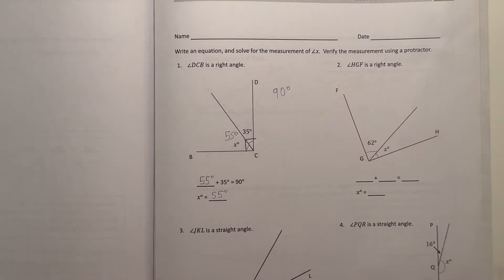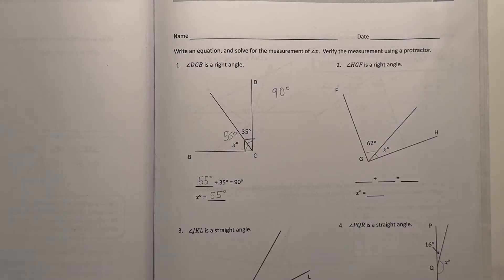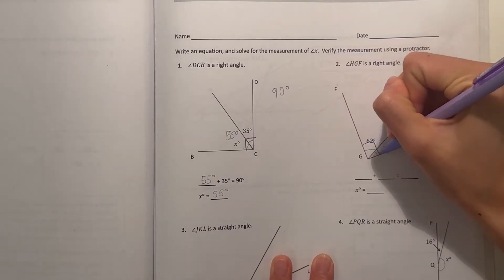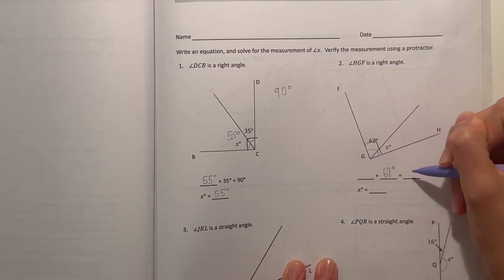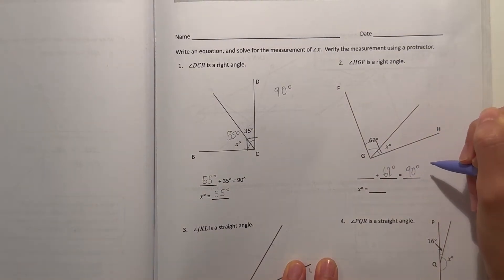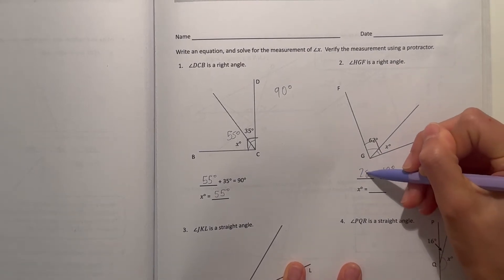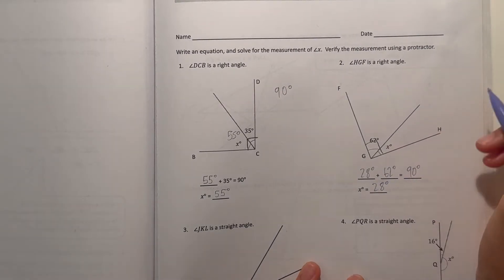All right, now number two. HGF is a right angle. All right, so I have another right angle. Let's see, HGF right angle. We have 62 degrees and the total is 90 degrees. So 90 minus 62 is 28, so that means x must be 28. So then 28 plus 62 would be 90. So x equals 28 degrees.